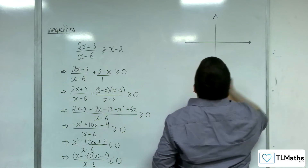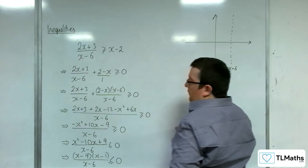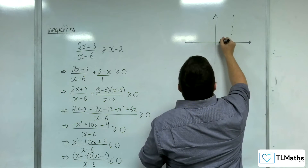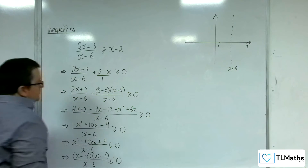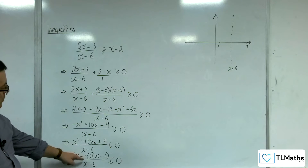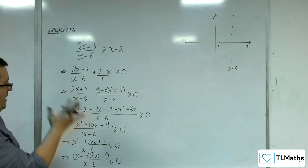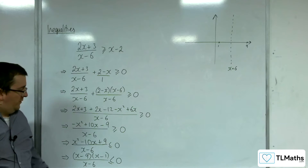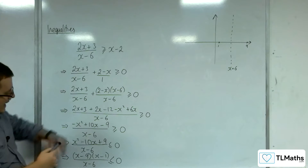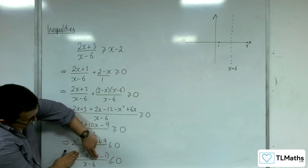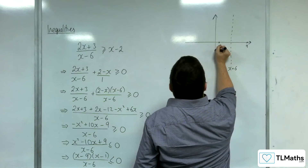The denominator (x - 6) means there's a vertical asymptote at x = 6. Because we've got (x - 9)(x - 1), it's crossing the x-axis at x = 1 and x = 9. Because we've got a quadratic over a linear term, as x tends to infinity it turns into a diagonal line — an oblique asymptote. I can work out where it crosses the y-axis by putting x = 0: that gives (-9)(-1)/(-6) = -3/2.